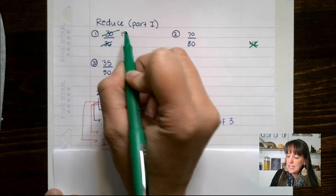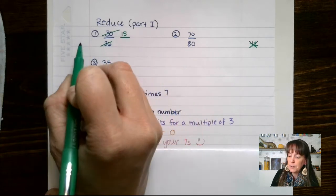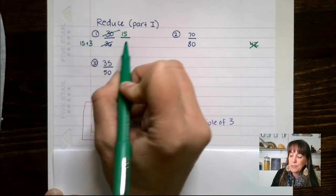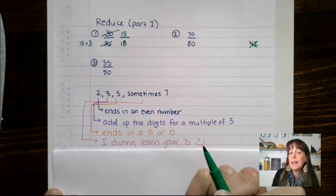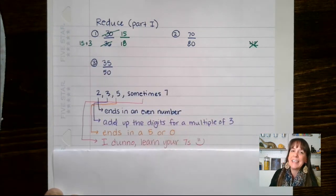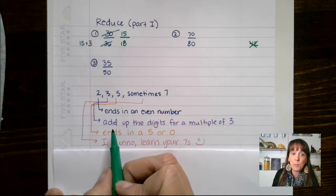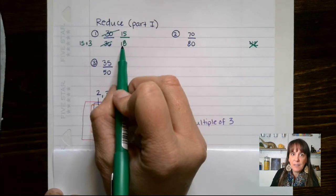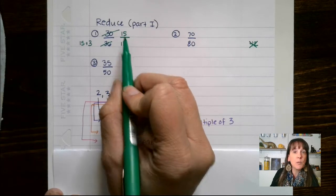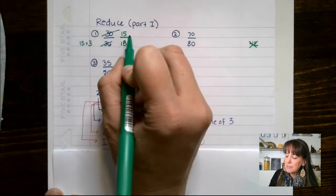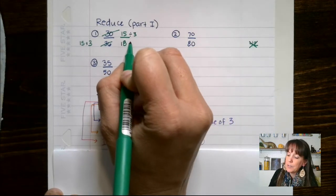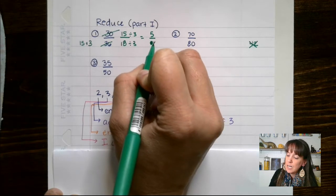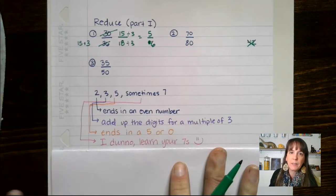Half of 30 is 15, and half of 36 is 18. I look at that again and I can't cut those in half again. So I try my 3 method: 1 plus 5 gives me 6, and 1 plus 8 gives me 9. Both 6 and 9 are multiples of 3, so I divide both by 3 and I get 5 over 6.